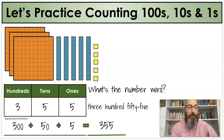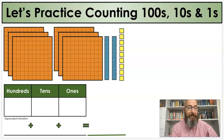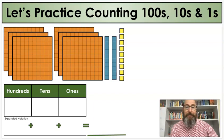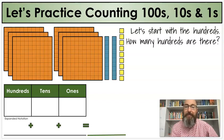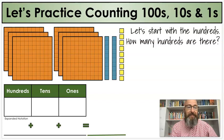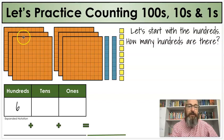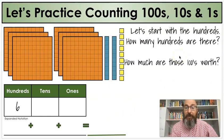I think we're going to do maybe one or two more, and then we'll be done. We'll make this one our last one, maybe. Again, let's start with the hundreds. How many hundreds are there? Be careful counting. There's more this time. Six is correct. One, two, three, four, five, six. And six hundreds. How much are those hundreds worth? Six hundred is correct.